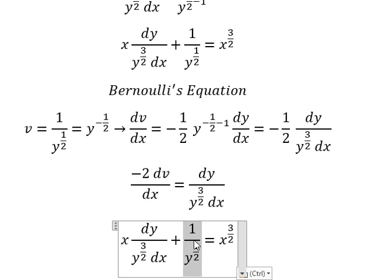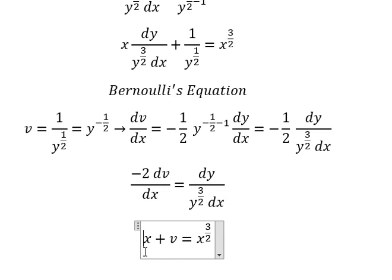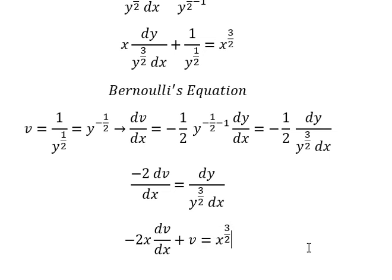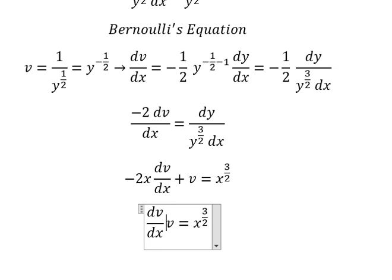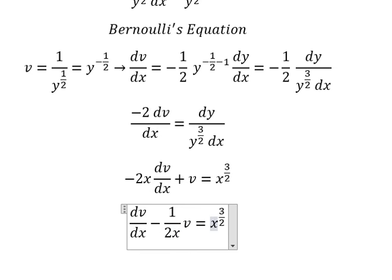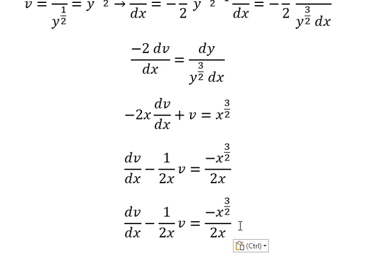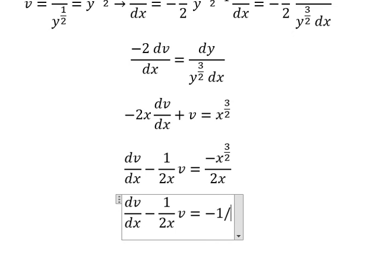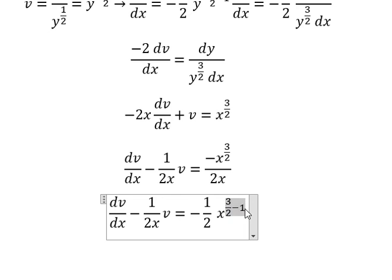Next, we substitute v for the corresponding terms. We divide both sides by negative 2 and simplify, giving us s to the power of 3 over 2 minus 1, and we have 1 over 2.